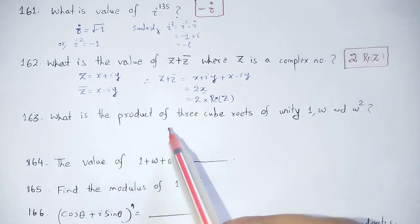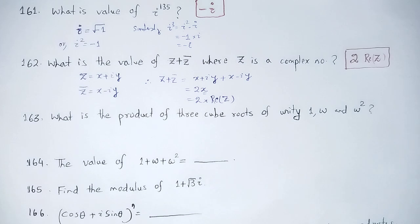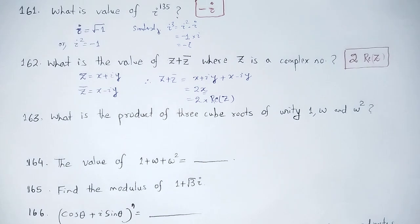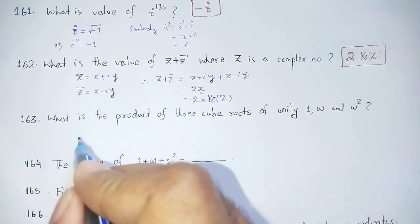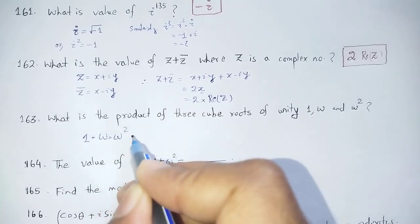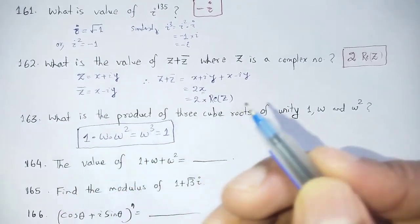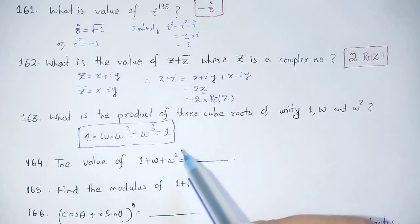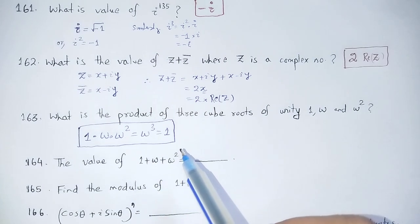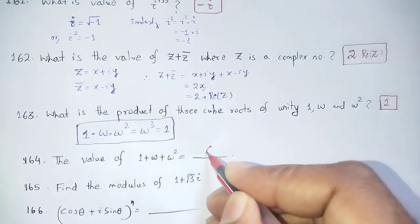Next question: What is the product of the three cube roots of unity — 1, ω, and ω²? The product 1 × ω × ω² = ω³ = 1. The addition of the three cube roots is 0, and the product result is 1.